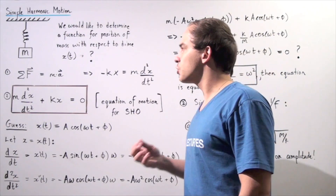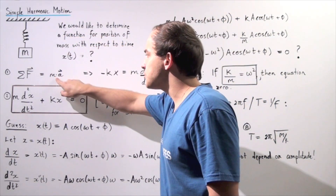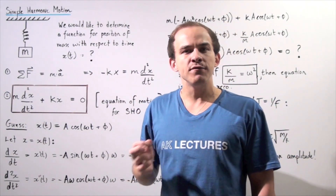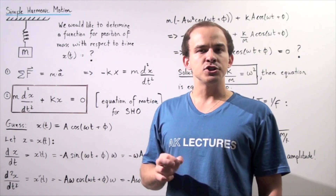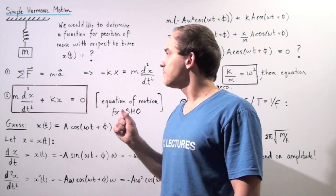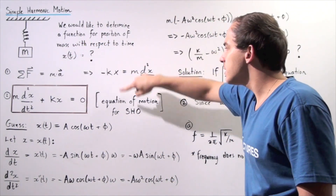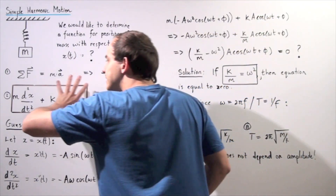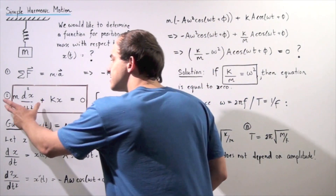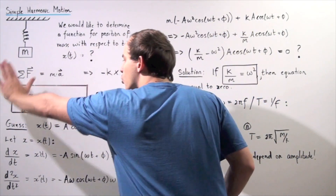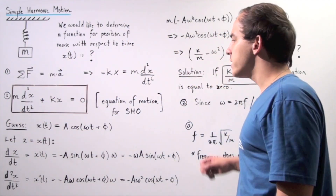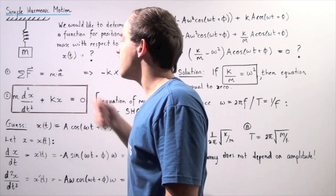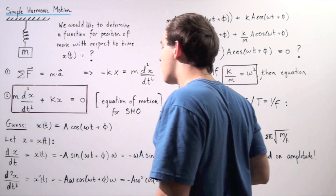Because we want to find an equation x with respect to t, we replace the acceleration a with the second derivative of the position function x with respect to time t. We then bring the left side to the right side, obtaining a differential equation where the two terms sum to zero. This is commonly known as the equation of motion for simple harmonic oscillators.